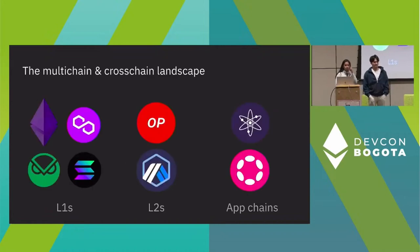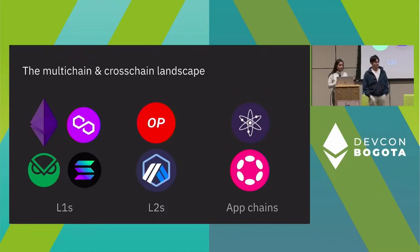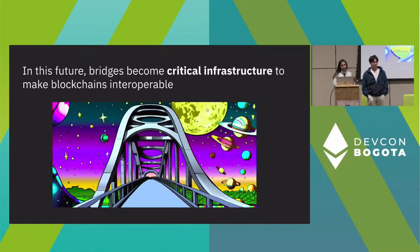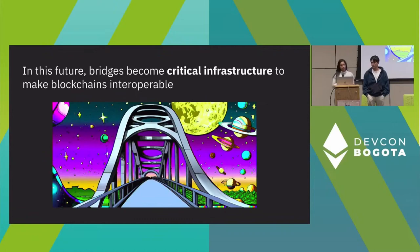Let's start with a super high overview of the multi-chain and cross-chain landscape. In the past few years, a bunch of different L1s and L2s and app chains have come online. They all lie on very different points of the trade-off curve in terms of decentralization, security, transaction cost, and throughput. As the number of applications on these different L1s and L2s has increased, it's important that users are able to interact between these different applications. In this multi-chain future, bridges have become critical infrastructure to make blockchains interoperable. It's really important that users' funds and assets are not siloed in one ecosystem, and they can interact with all the applications they want in a seamless manner for the best user experience.